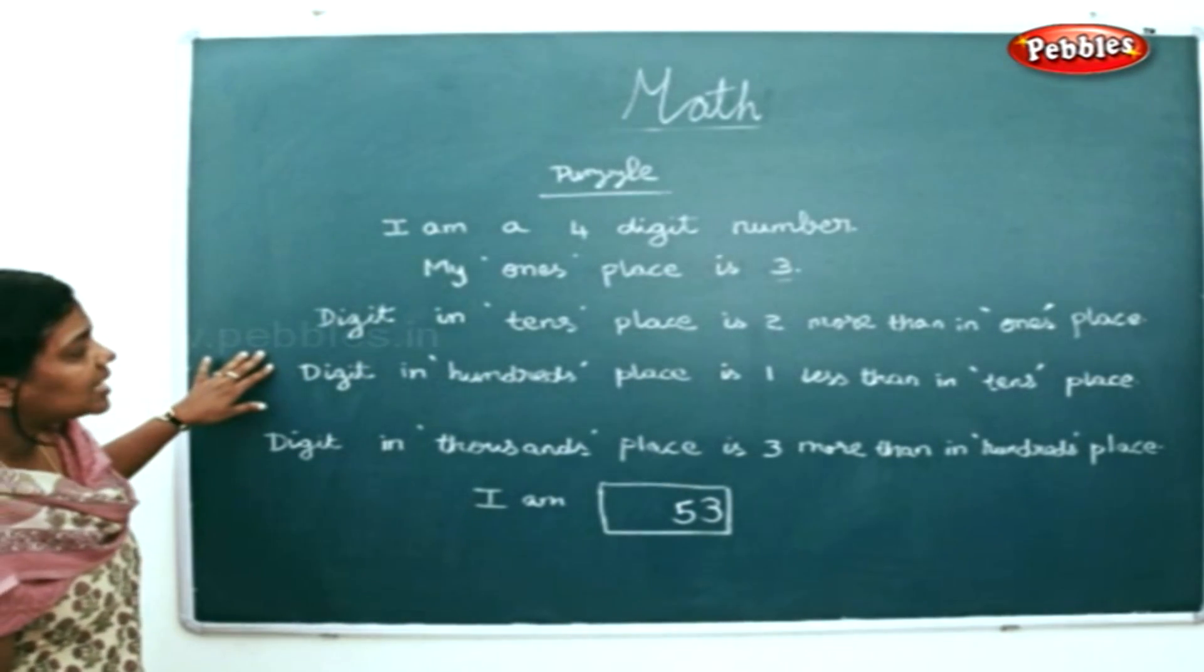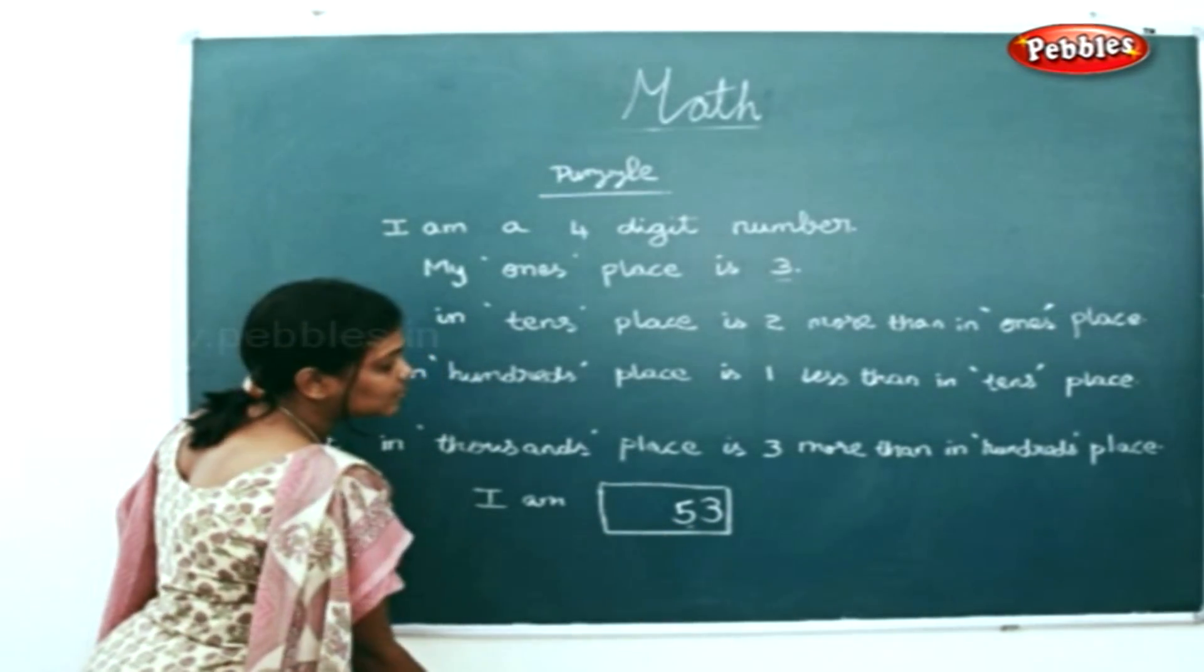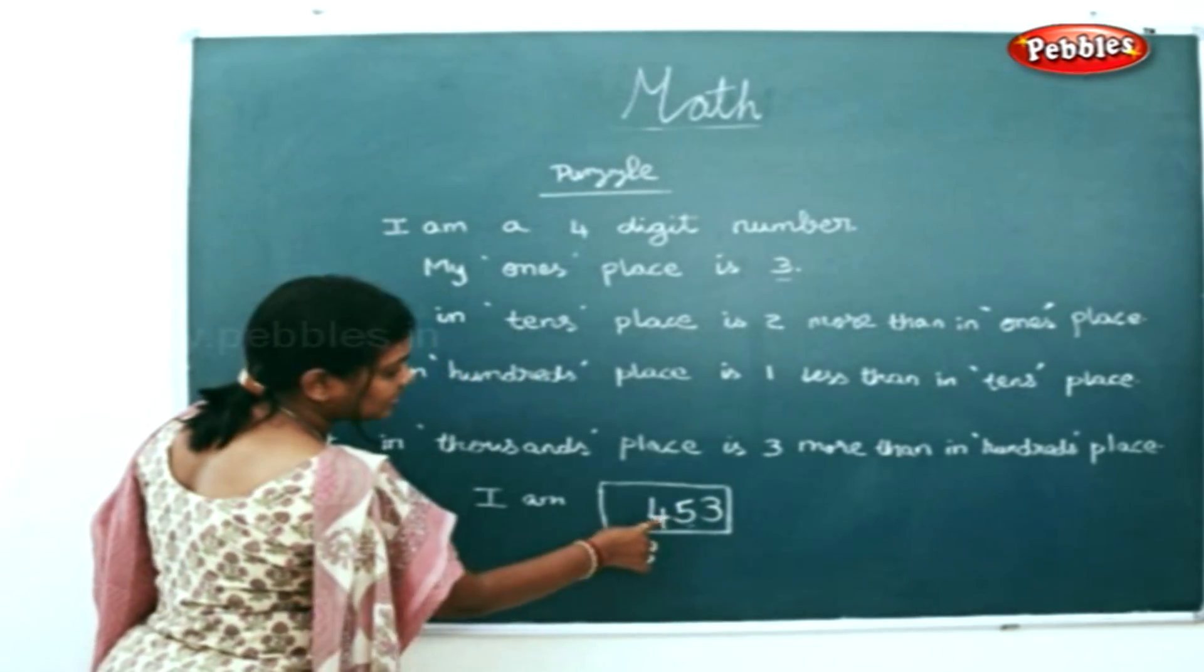And in the hundreds place, it is one times less than the tens place. So this is your tens place. One time less will be four. One time less than five is four.